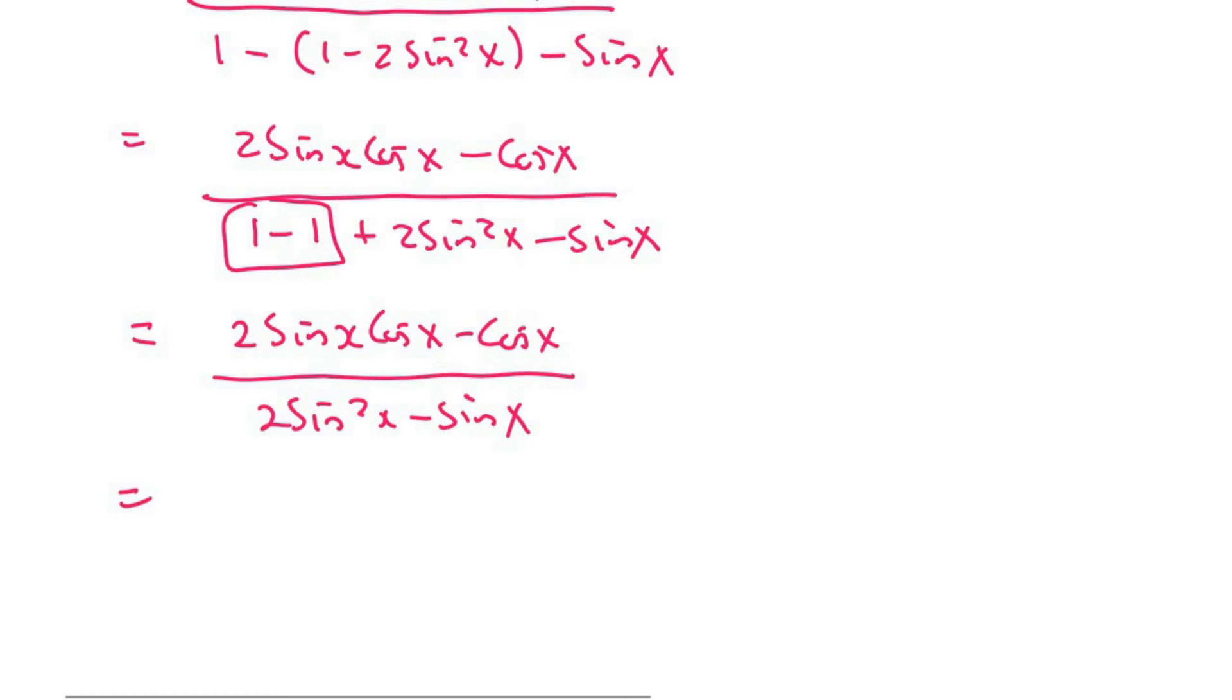So if you look at the top there's a common factor in those two terms. That common factor is cos. Can you see it? It's common there. So we take that out as a common factor and then we'd be left with 2 sin x minus 1.